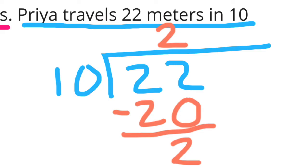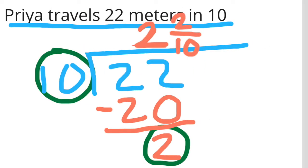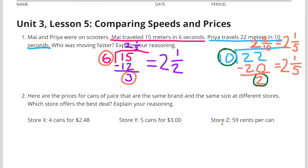22 divided by 10 is 2 with 2 over 10 remaining. 2 over 10 is the same as 1 fifth. Priya can travel 2 and 1 fifth meter per second.